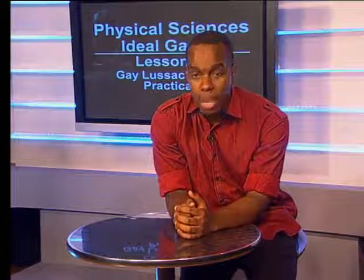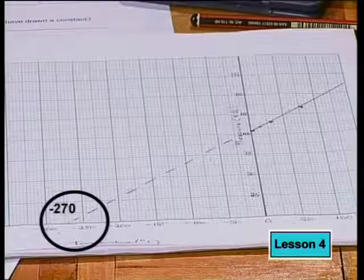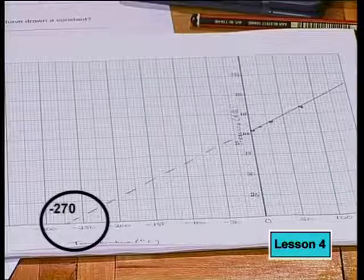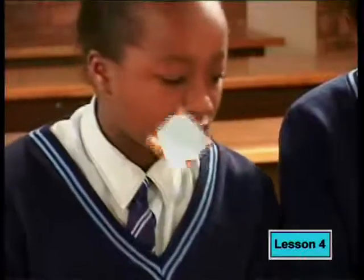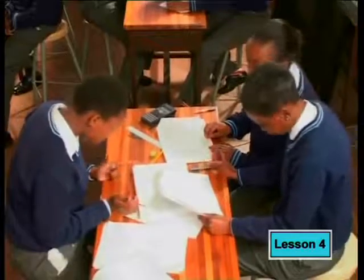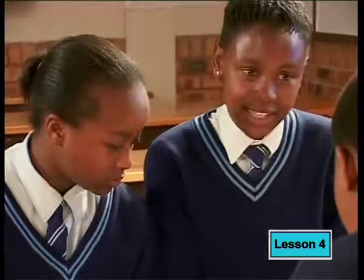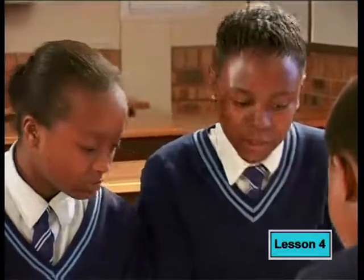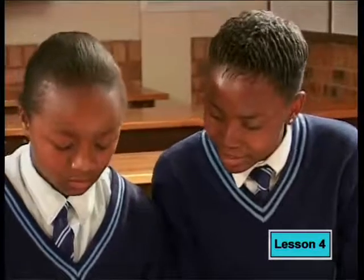Extend your graph all the way to zero kilopascals. What would the temperature need to be to cause this pressure? One student found the temperature to be minus 270 degrees Celsius; another found minus 274 degrees Celsius; another found about minus 285 degrees Celsius. So our conclusion is that the x-intercept is between minus 270 and minus 300 degrees Celsius.